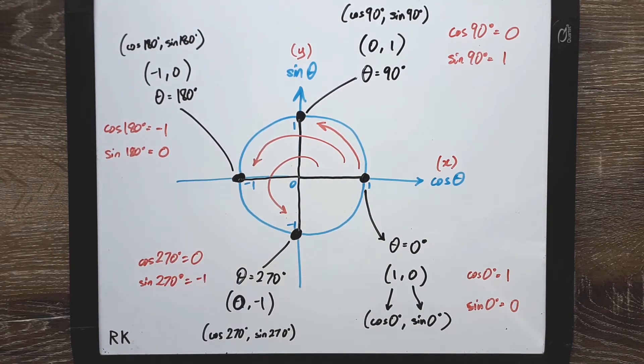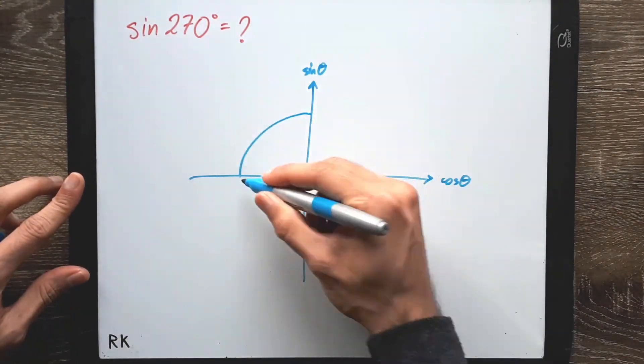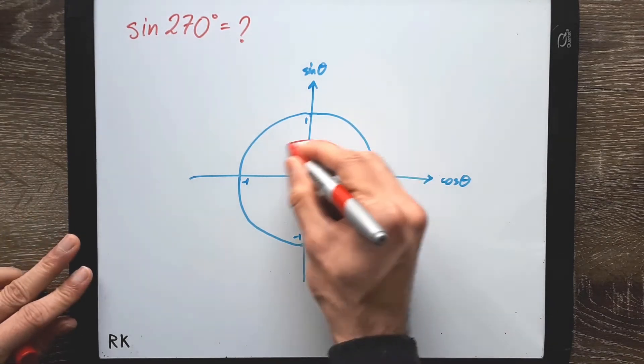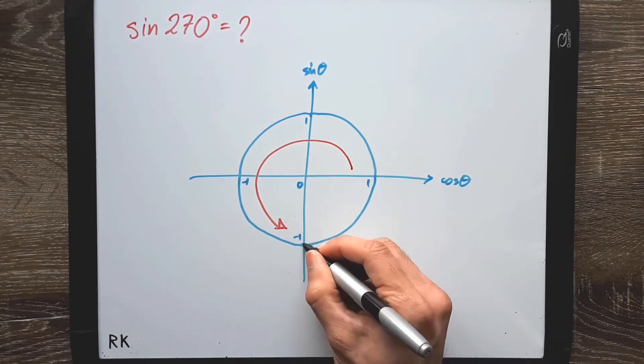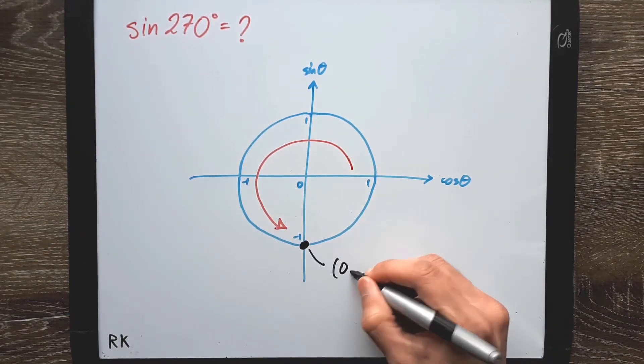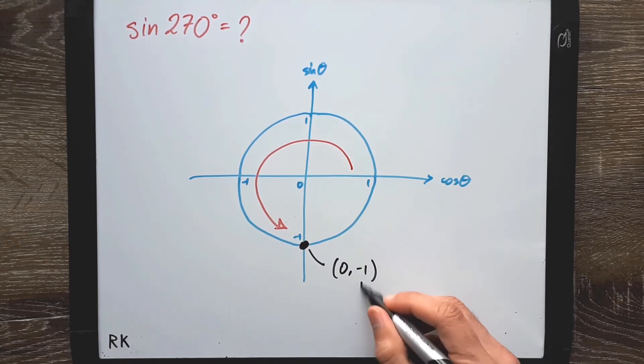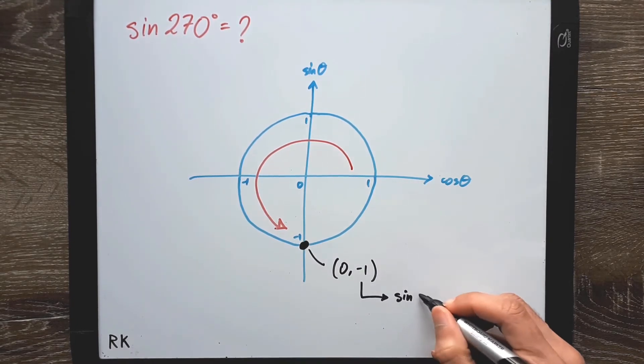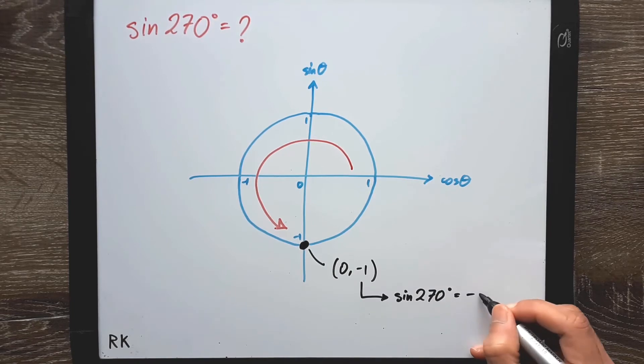So let's try a question. Say we want to work out the sine of 270. Draw your unit circle, rotate 270 counterclockwise, and label the point as 0 comma negative 1. Pick out the y value, and this is sin 270 degrees. So we can say sin 270 equals negative 1.